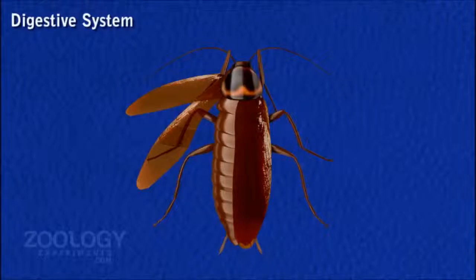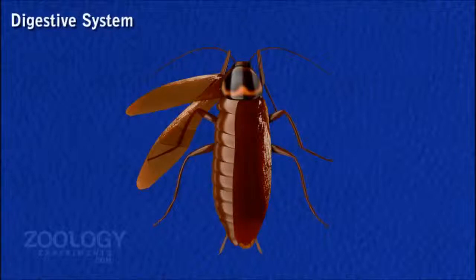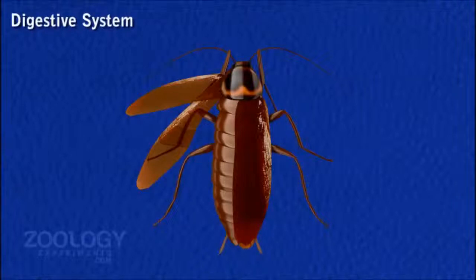Alimentary Canal: It is a long and slightly coiled tube with uneven diameter and divisible into three regions: foregut, midgut and hindgut.